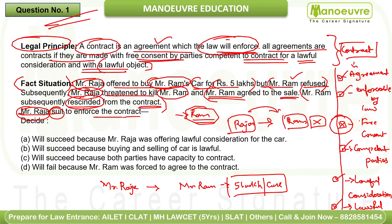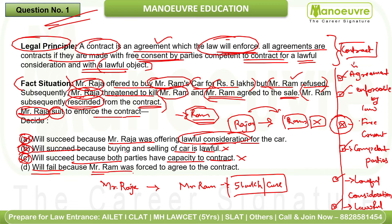Let's look at the options. Option A says Raja will succeed because he was offering lawful consideration — but lawful consideration alone doesn't make everything right, all elements must be present. Option B says Raja will succeed because buying and selling a car is a lawful object — but free consent is missing, so B is eliminated. Option C says will succeed because both parties have capacity to contract — yes, they're competent, but free consent is absent. Option D says will fail because Mr. Ram was forced to agree — this is correct.